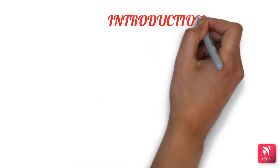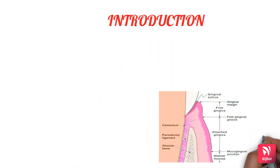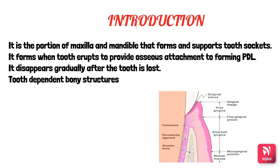The topic for discussion is alveolar bone. Periodontium contains two soft tissue components and two hard tissue components, and one of the hard tissue components is alveolar bone. This alveolar bone forms an osseous attachment to the periodontal ligament — the periodontal ligament fibers extend from the cementum to the alveolar bone. This osseous attachment is formed when the tooth is erupting. Always remember that alveolar bone is a tooth-dependent bony structure.